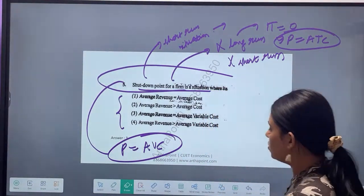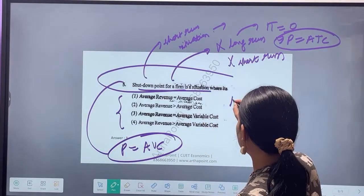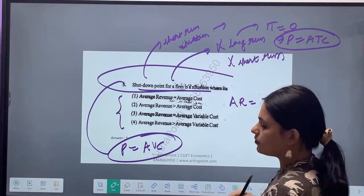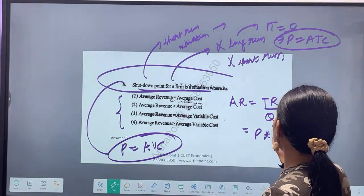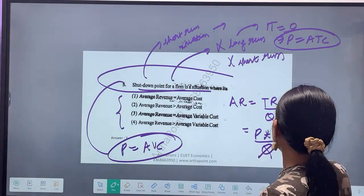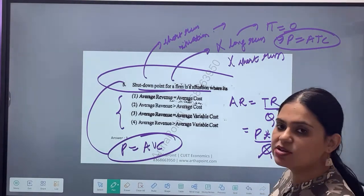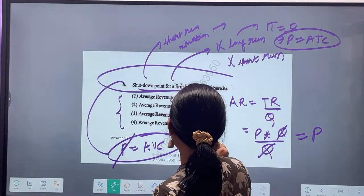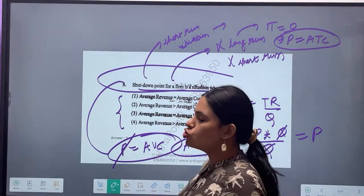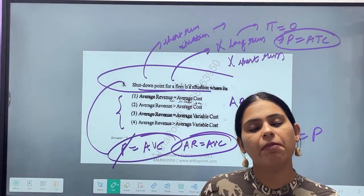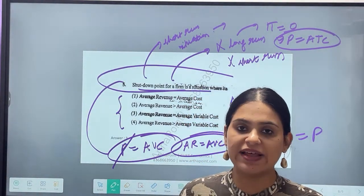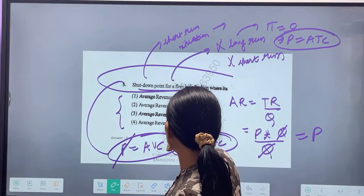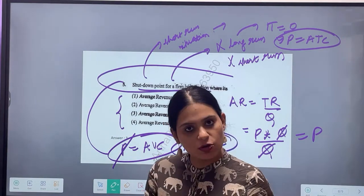Clear? I want to cover all my variable cost. Now we know that AR and P are equal. What is average revenue? Average revenue is total revenue by quantity. Total revenue is price times quantity, divided by quantity, which is P. So instead of P I can write AR equal to AVC. My aim is to cover my variable cost - that is my shutdown point.